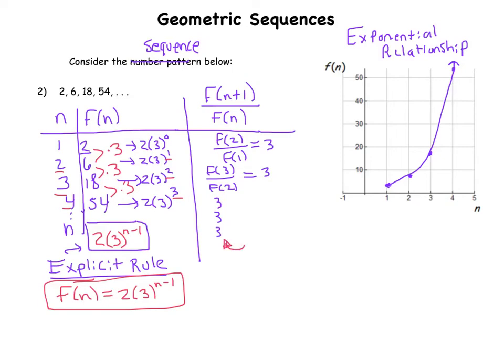Because you always get a 3 when you divide, this is called not the common difference—when we did arithmetic sequences it was a common difference—this is called a common ratio, okay? That word ratio should conjure up that operation, the operation of division, because you're dividing a term by the one before it.